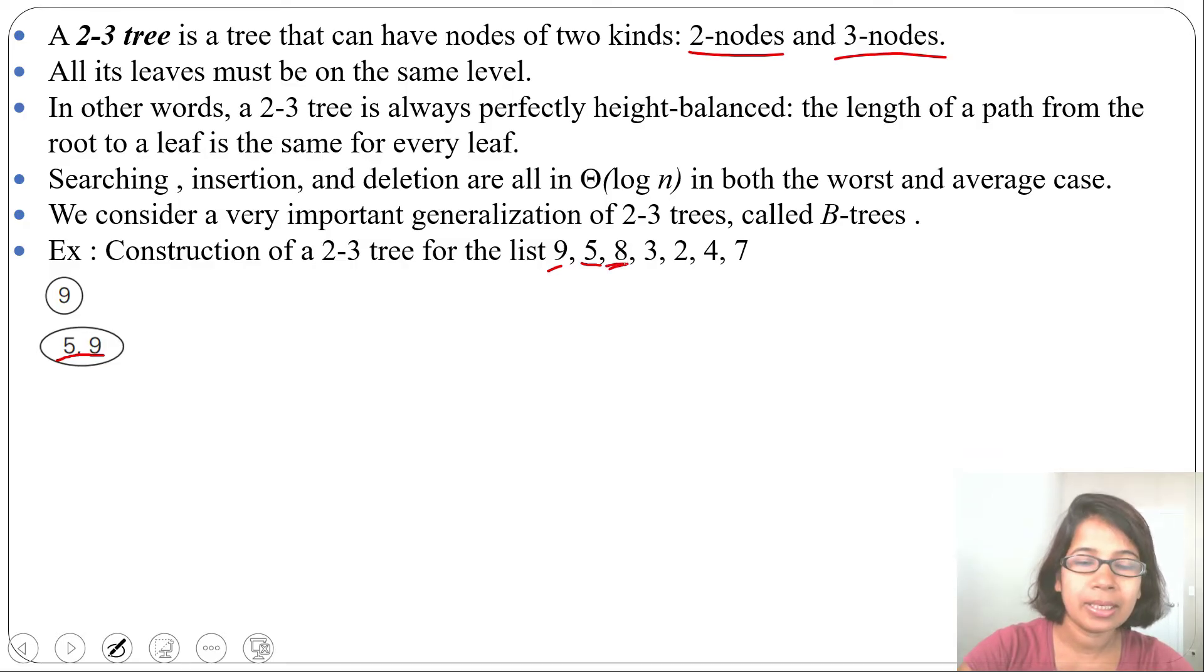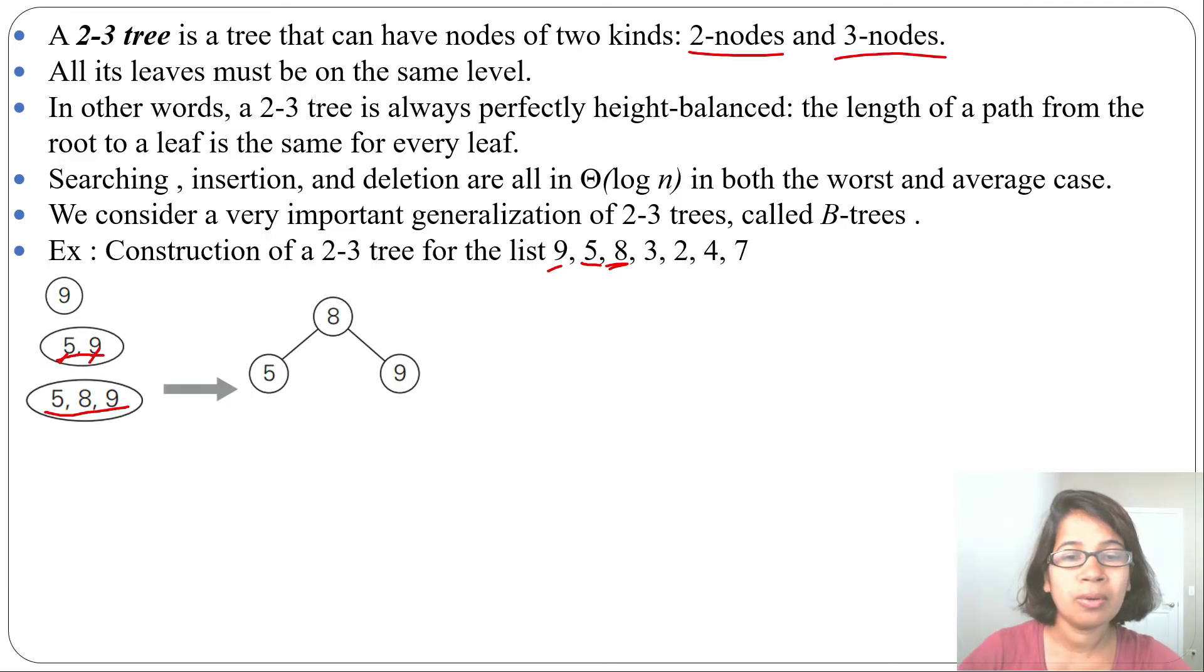Next we will insert 8. 8 is greater than 5 and less than 9, so 8 will insert in the same node: 5, 8, 9. When there are 3 values then we will split. 8 will be parent, 5 will be its left side, and 9 will be its right side. Every 2-3 tree is also a BST.